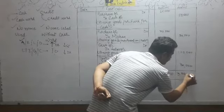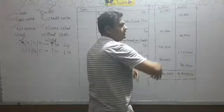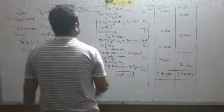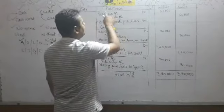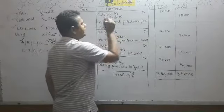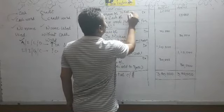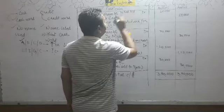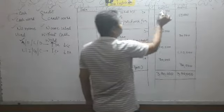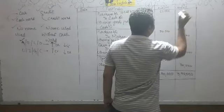When we go to next page, we will record transaction. Before recording on that page, what will we put? Total brought forward. Write this and put 3,30,000, 3,30,000.